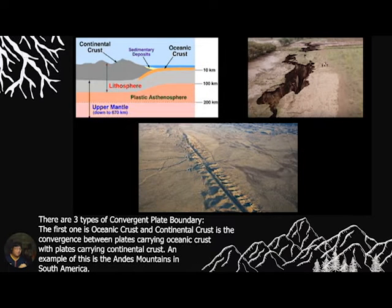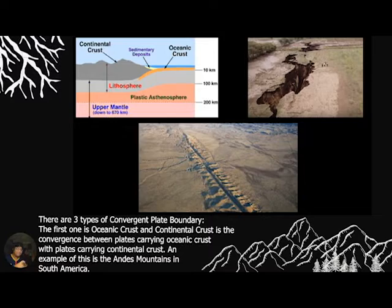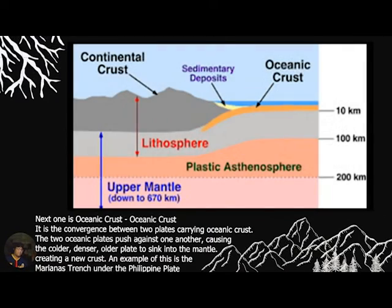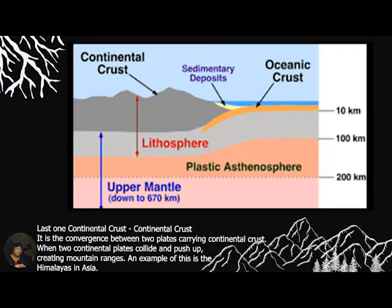There are three types of convergent plate boundaries. The first is oceanic crust meeting continental crust — the convergence between a plate carrying oceanic crust and one carrying continental crust, where the older, denser oceanic plate sinks into the mantle. An example is the Mariana Trench subducting under the Philippine plate. The second is continental crust to continental crust — when two plates carrying continental crust collide, they push upward, creating mountain ridges. An example of this is the Himalayas in Asia.